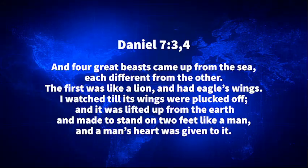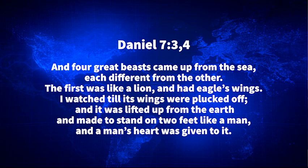We also see a couple of these animals in Daniel chapter 7. Verse 3 says: 'And four great beasts came up from the sea, each different from the other. The first was like a lion and had eagle's wings. I watched till its wings were plucked off, and it was lifted up from the earth and made to stand on two feet like a man, and a man's heart was given to it.'